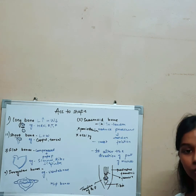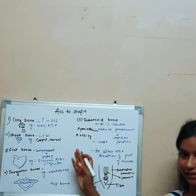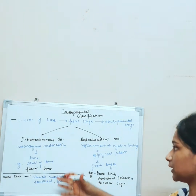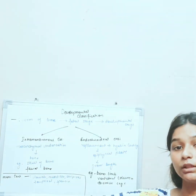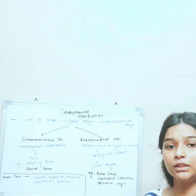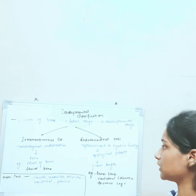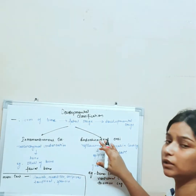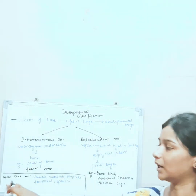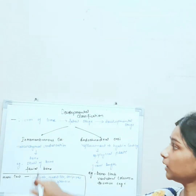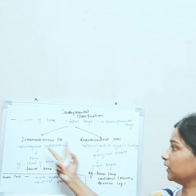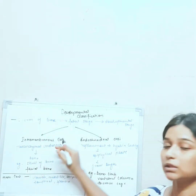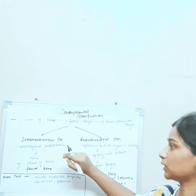Now we will move to our second category: developmental classification. Developmental classification describes the formation of bone from the fetal stage to the developmental stage. It is basically of two types: intramembranous ossification and endochondral ossification. There is also a third type — membrano-cartilaginous ossification — but our main focus is on the first two.